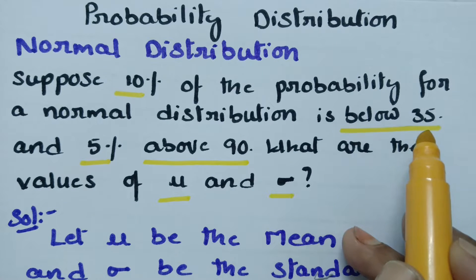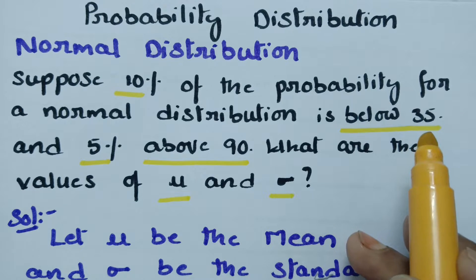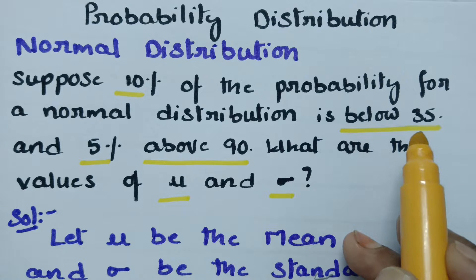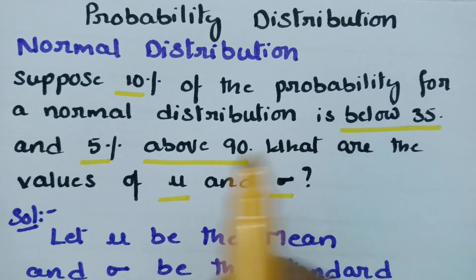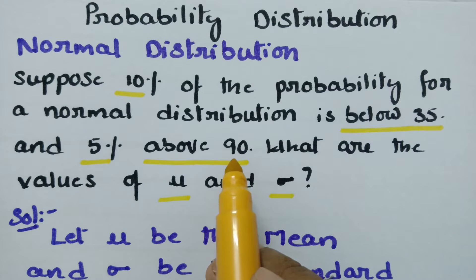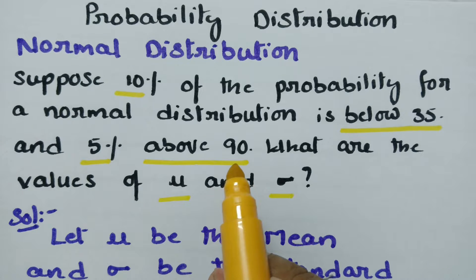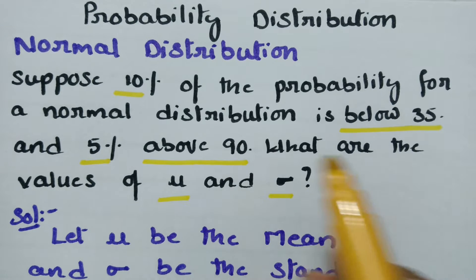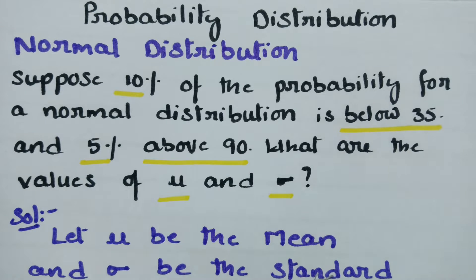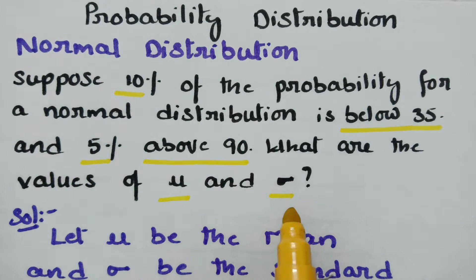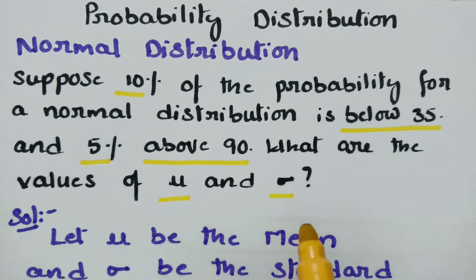Below 35 means the area to the left of the ordinate, and above 90 means it is towards the right side of the ordinate. This is the thing you have to keep in mind while drawing the normal curve. Next, we have to find out the values of mu and sigma.